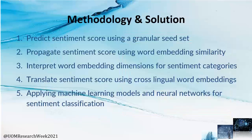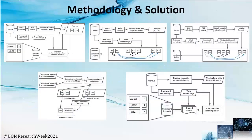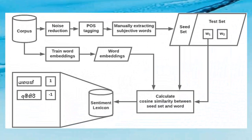Moving into the methodology and solution, we proposed five methodologies for sentiment lexicon generation. Our first method was to predict the sentiment score using a granular seed set. A granular seed set is extracted from the corpus, and this seed set is used to calculate word similarity for subjective words. We combined existing seed set creation techniques to filter seed words, then calculated the cosine similarity between a given word and the seed set to propagate the sentiment.